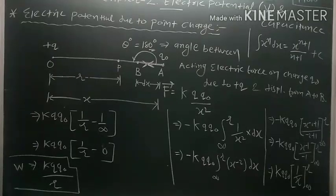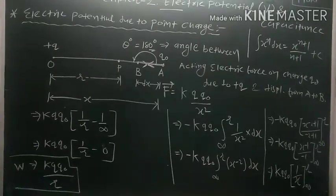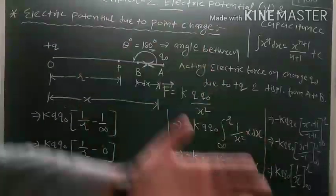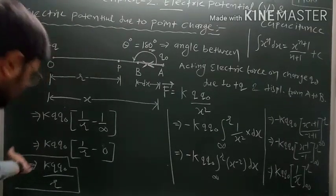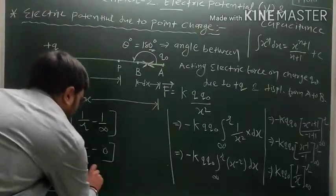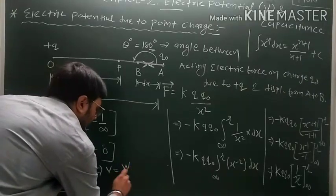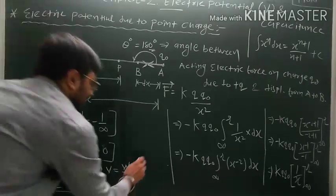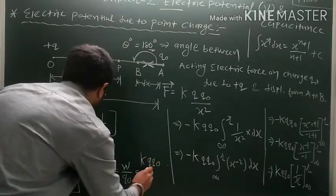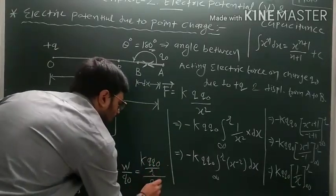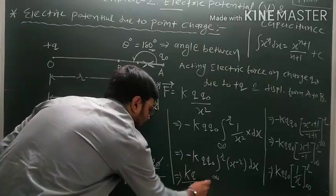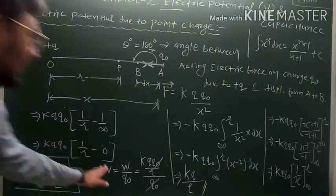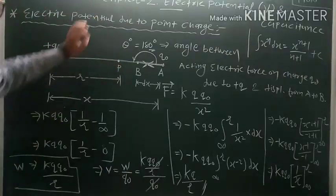From this equation we conclude that the work done in moving a unit charge from infinity to point P — the electric potential at point P — is V equals W divided by Q₀. We know W equals K·Q·Q₀ upon R, so dividing by Q₀, Q₀ cancels out and we finally get V equals K·Q upon R. That is our electric potential at point P.